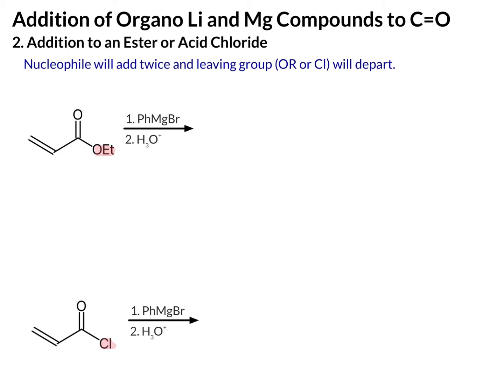Let's go through the mechanism for one of these. Our reagent is phenylmagnesium bromide. We break that up and treat it as phenyl minus and magnesium bromide plus, which is a spectator so we won't write it. Phenyl minus is a nucleophile and it will add to the carbonyl carbon.